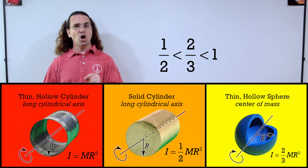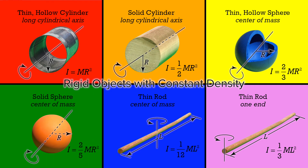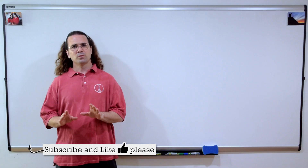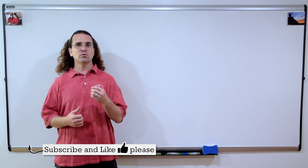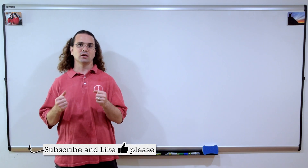We have now completed discussing all six moments of inertia equations. A common error students make is to forget that the thin rod moment of inertia equations include L for length, while all the others include R for radius. Students often mistakenly put R in the thin rod equations, but they have L for length. Again, please do not memorize these equations — instead, understand why they have their relative fractions.